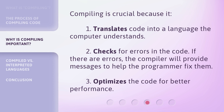Compiling is crucial because it: 1. Translates code into a language the computer understands. 2. Checks for errors in the code — if there are errors, the compiler will provide messages to help the programmer fix them. 3. Optimizes the code for better performance.